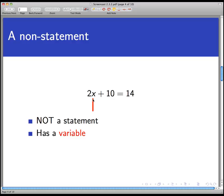The fact that there's an x right here means that this sentence, 2x + 10 = 14, is sometimes true, but sometimes false as well. If I put in x equals 2, then I have a true statement. If I put in x equals 3, I have a false statement.